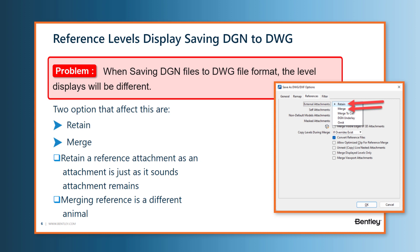In our third scenario, we'll see saving a DGN file with a sheet model with a self-attachment of the design model, which is very common, especially if we're emulating the viewports that you can have in a DWG file when opened from AutoCAD. In most of these scenarios, these are generally not a problem. However, the support team has commonly had users report that the level mask or level on-off state is not correct.